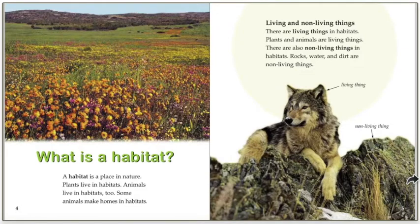What is a habitat? A habitat is a place in nature. Plants live in habitats. Animals live in habitats too — some animals make homes in habitats. There are living things in habitats. Plants and animals are living things. There are also non-living things in habitats. Rocks, water, and dirt are all non-living things.